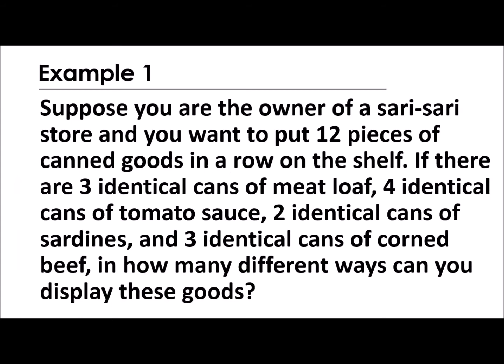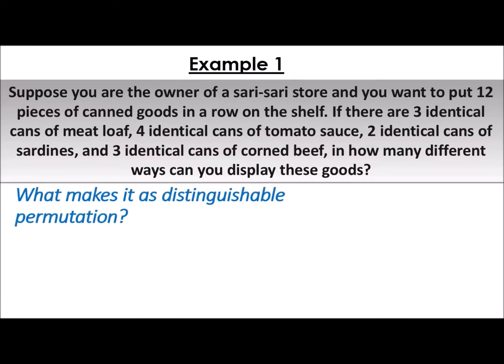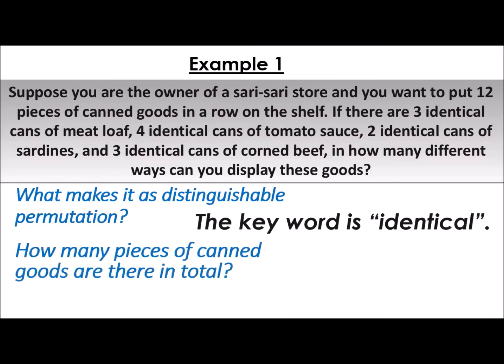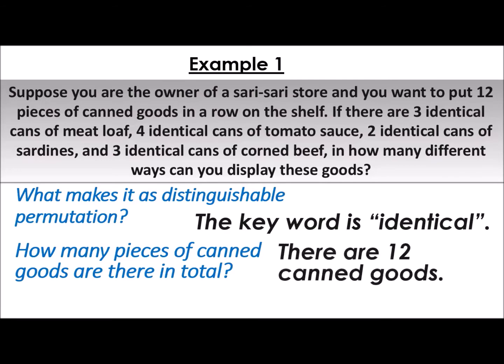Suppose you are the owner of a sari-sari store and you want to put 12 pieces of canned goods in a row on a shelf. If there are 3 identical cans of meatloaf, 4 identical cans of tomato sauce, 2 identical cans of sardines, and 3 identical cans of corned beef — in how many different ways can you display these goods? What makes it a distinguishable permutation? The keyword is 'identical.' There are 12 canned goods in total, which means that is the value of our N.